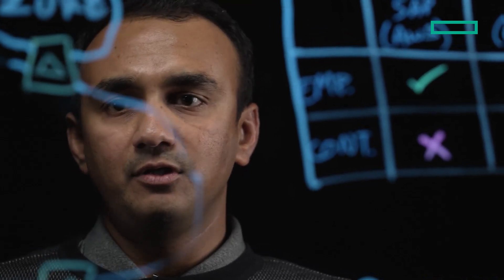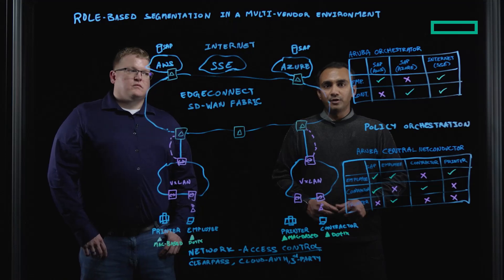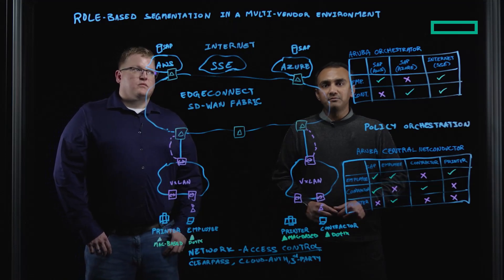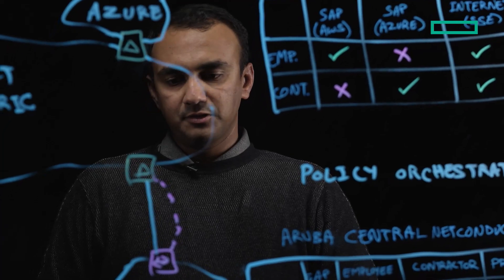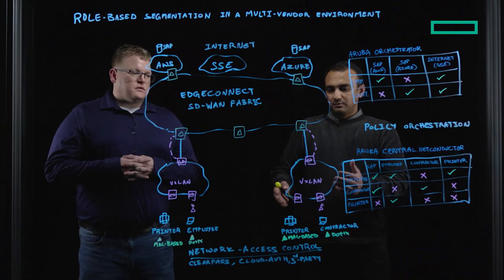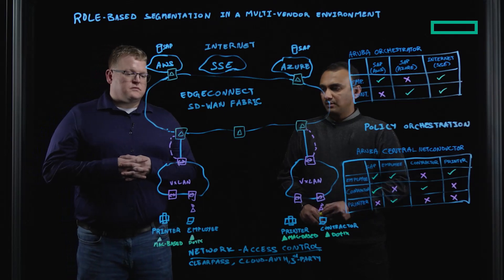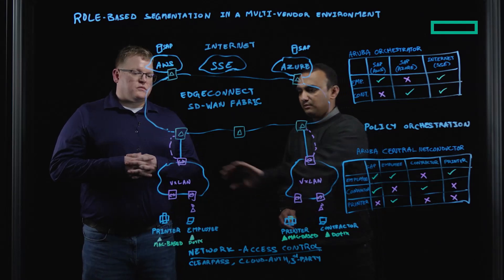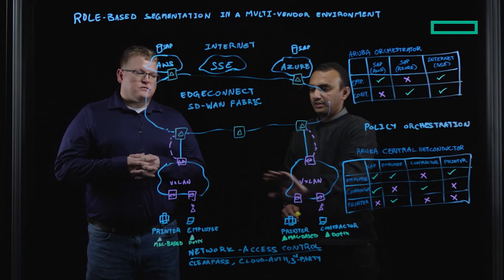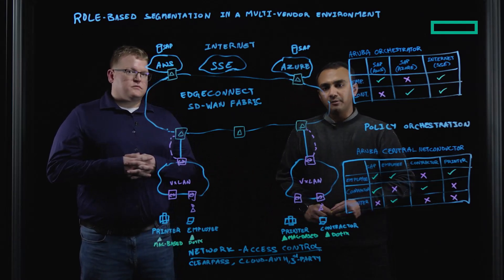Now, let's take a couple of use cases and see how the solution stitches together to give you that true end-to-end segmentation based on roles. In our first use case, we have a customer who have deployed Aruba Central Net Conductor across at various locations. Here in this case, location one, and this is location two, where they have the Aruba Central Net Conductor fabric built.